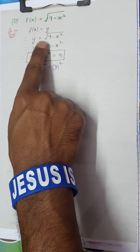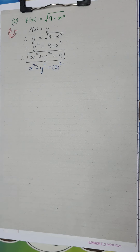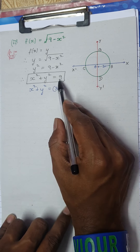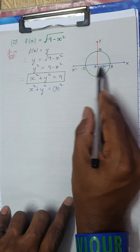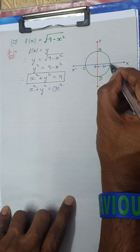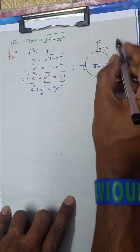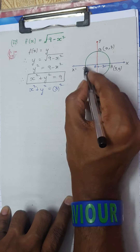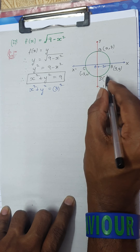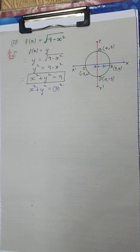There are two methods to find the domain and range; I find the circle method simplest. For the circle x² + y² = 9 with center (0,0) and radius 3: point A is (3,0), point B is (0,3), point C is (-3,0), and point D is (0,-3). From this you can easily write the domain and range.